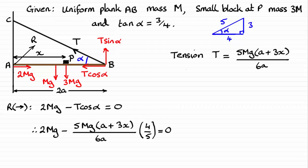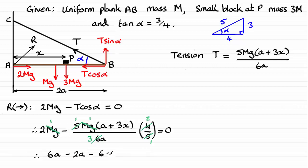I can see that we could do a lot of cancelling here. For instance, this 5 cancels out with that 5. I can divide through by mg on each term — so that one goes, that one goes. Then 2 will go into both the 4 and the 6: 2 into 4 goes 2, and 2 into 6 goes 3. So what I'm going to do now is multiply throughout by 3a to get rid of the fraction. We're therefore going to have 2 times 3a, that's 6a. When we multiply this fraction with 3a, all we're left with is 2 times (a + 3x). Expanding that bracket gives us minus 2a minus 6x, and that equals 0.